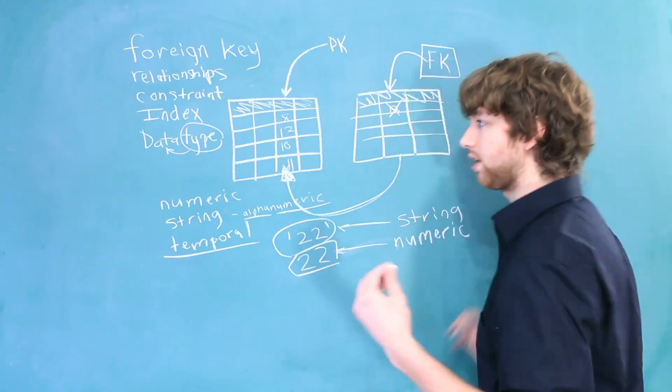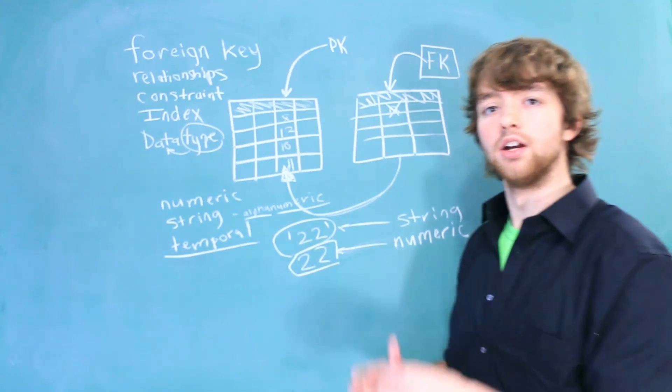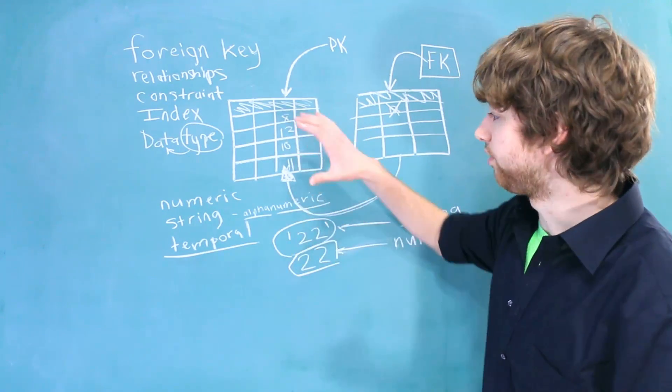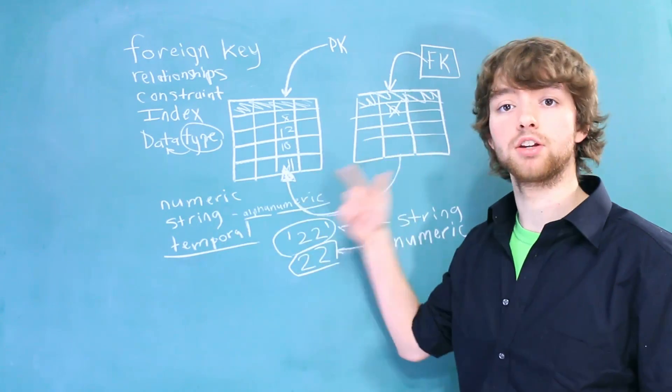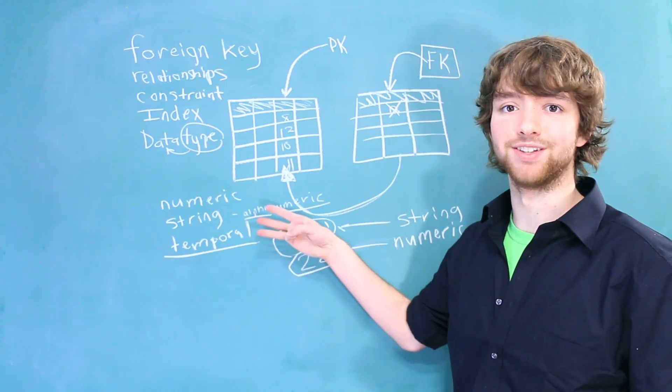Temporal, those are dates and we'll get into all of those details later. But just so you guys have a rough overview, there's three main categories: numeric, string, and temporal. Memorize those.